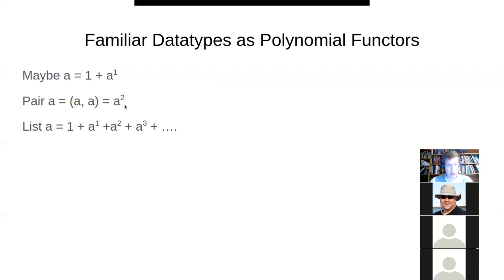Pair is like a squared. A list is a polynomial functor, it's just one plus a, plus a squared, plus a cubed. This is like one - you can have nothing, it can be empty, or it can be an int. A list of int can be empty, or a single int, or int comma int, namely a pair, that's a square, or int comma int comma int, which is a cube. So these are polynomial functors, don't let them scare you.